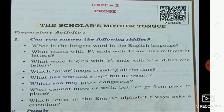Second one: what starts with P, ends with E, and has millions of letters? The word should start with P, end with E, but has millions of letters. Write down: post office — P-O-S-T-O-F-F-I-C-E. Post office, because when we go to the post office we can see millions of letters.